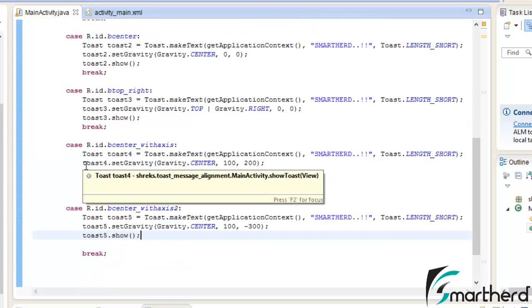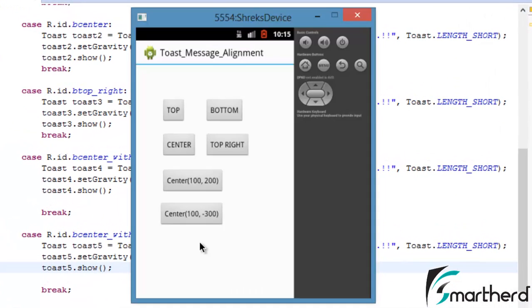Now just save it and run our application. Now our app is successfully running and we are able to see our UI in front of us. Now let's check out each button one by one. Let's click on the top button. At the top we are getting the Toast message, then at the bottom, then at the center.